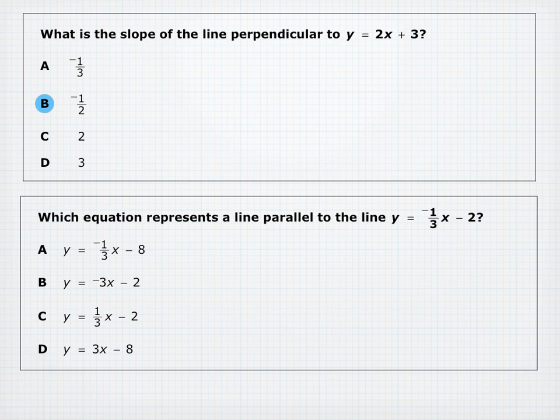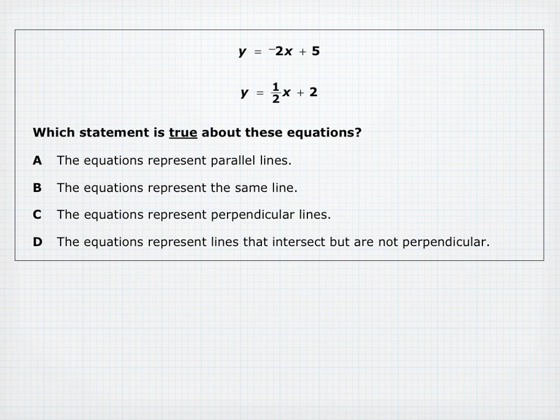Which equation represents a line parallel to Y equals negative 1 over 3 times X minus 2? A parallel line must have the same slope, negative 1 over 3. Only answer A has that slope. For the equations Y equals negative 2X plus 5 and Y equals (1 over 2)X plus 2: slopes negative 2 and 1 over 2 are negative reciprocals, so the lines are perpendicular.